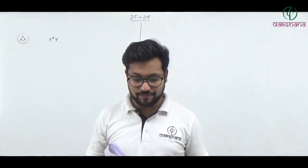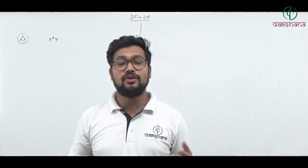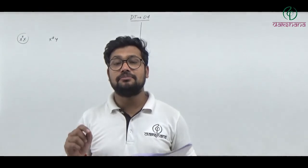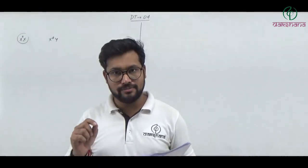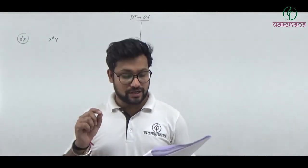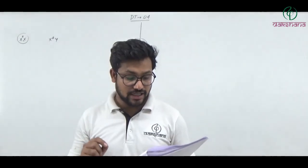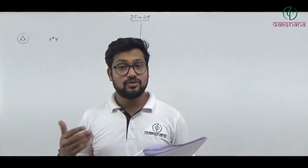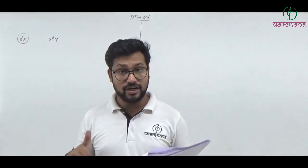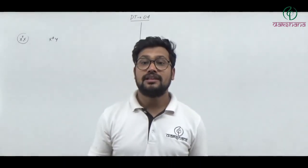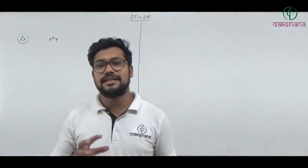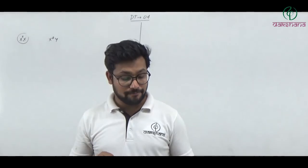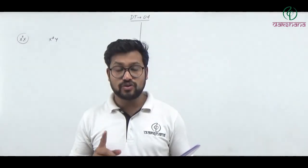Question number eighty-five: Pomato is what? Pomato is an example of somatic hybridization — a hybrid of tomato and potato. It is both a somatic hybrid and an allopolyploid, because two different cell sets with different chromosome numbers are crossed. Question number eighty-five's fourth option is the right answer.